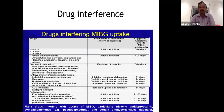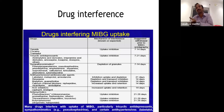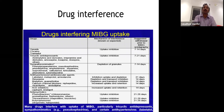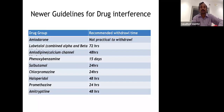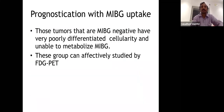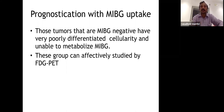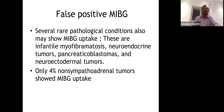Indications for MIBG scan include evaluation of tumors of neural crest origin, neuroblastoma, and suspected paraneoplastic syndromes like opsoclonus-myoclonus. In neuroblastoma, MIBG is stored in the cytoplasm; tumor size and necrosis affect uptake. Many drugs interfere with MIBG scan, making it time-consuming — imaging is done at 48 and 72 hours. Nowadays, MIBG scan is preferred mainly when MIBG therapy is planned; localization is done with FDG, gallium DOTATATE, or F18-DOPA.